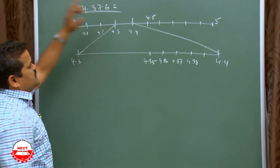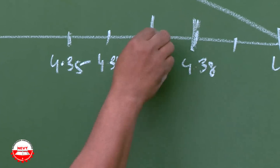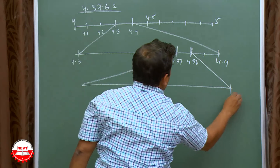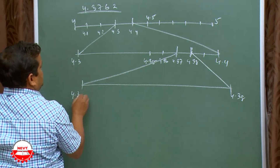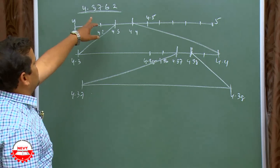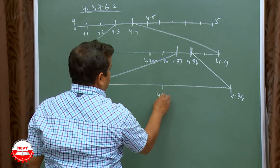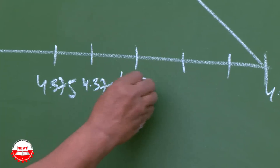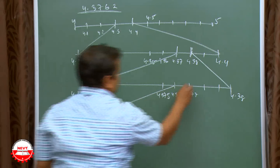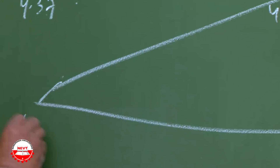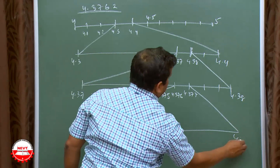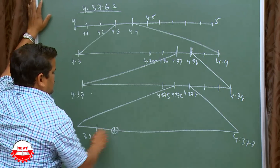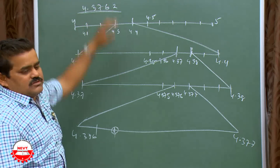Which one you have to magnify? 4.37 means 4.37 and 4.38 — you have to magnify these. This is 4.38, this is 4.37. You need 4.376, so the middle is 4.375. Divide into 4 equal parts: 4.376, 4.377. This you have to again magnify. You need 4.3762 — that means mark 1, 2 — this one. Like this, you try 2 or 3 questions on your own.